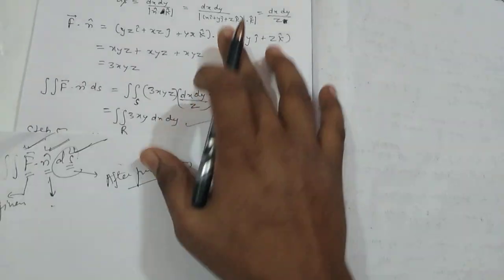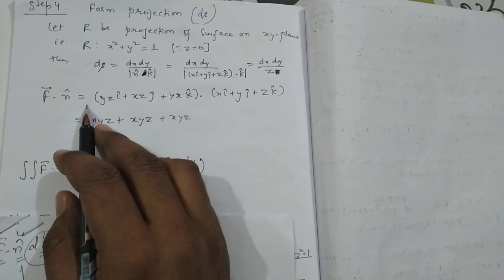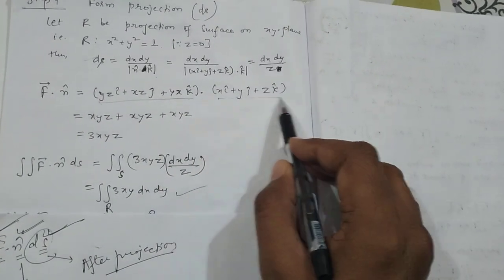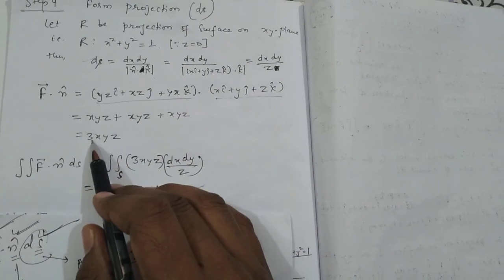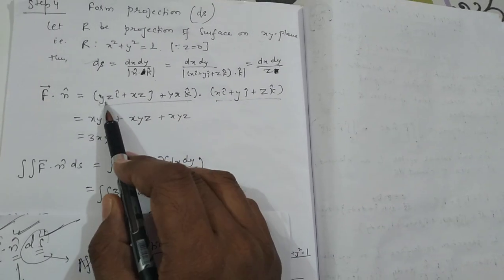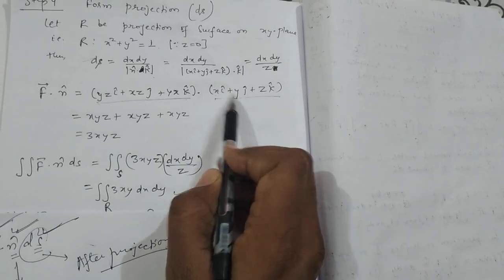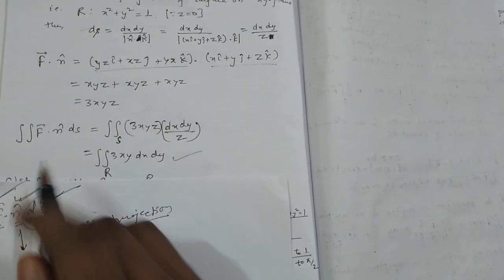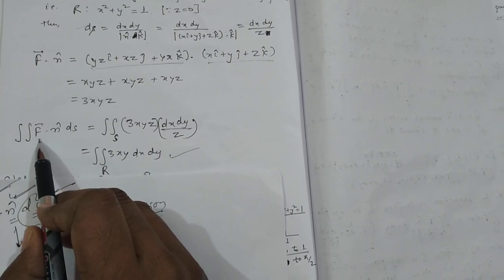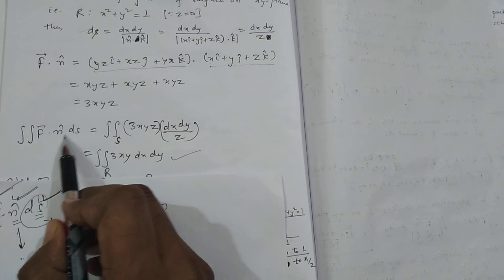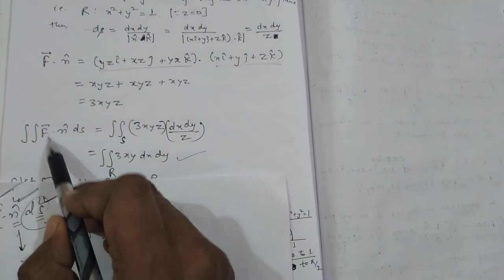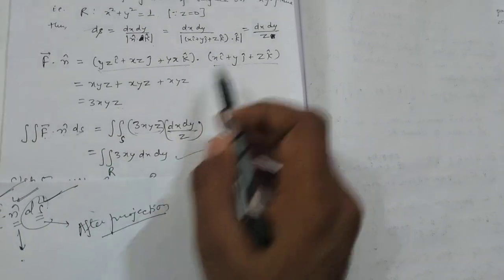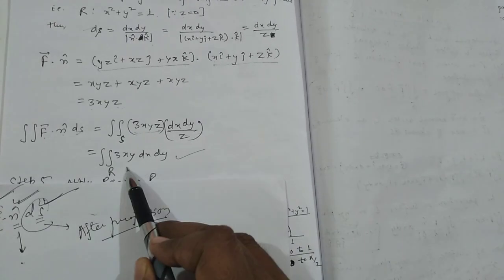So F·n̂ = 3xyz, and dS = dx dy / z. Substituting into the integral: ∫∫ F·n̂ dS = ∫∫ 3xyz · (dx dy / z) = ∫∫ 3xy dx dy. The z cancels. Now we substitute all values and set up the limits.